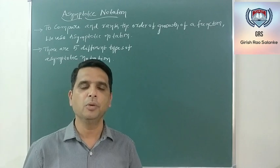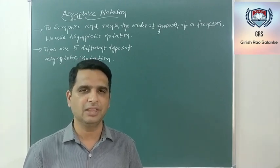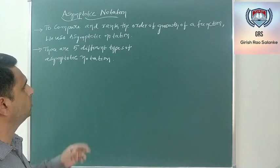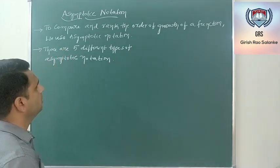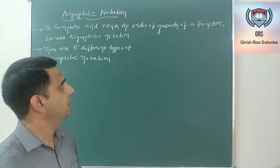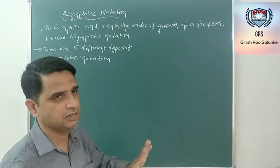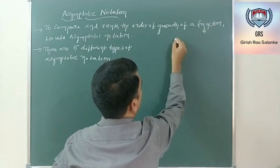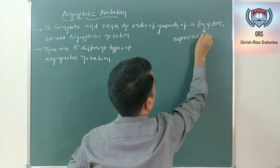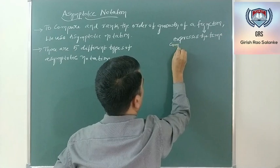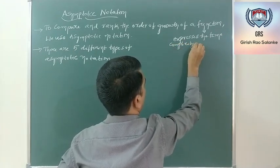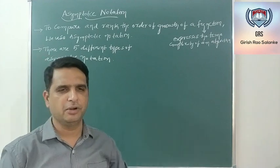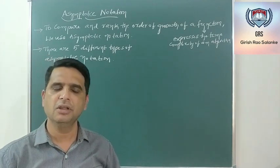Let's start the discussion with what do you mean by Asymptotic Notation and what is the reason for using it. Asymptotic Notation can be used to compare and rank the order of growth of a function. This function expresses the time complexity of an algorithm. So, this is the main objective of using Asymptotic Notation — to compare and to rank the order of growth of a function.